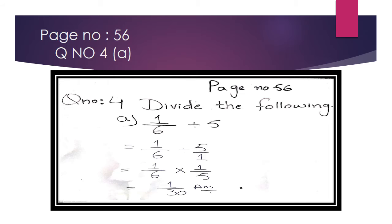We will solve Part A: 1/6 divided by 5. Here we have 1/6, and we are dividing by 5. We need to write 5 as a fraction, so it becomes 5/1. The denominator is missing, so we write it as 5 upon 1.